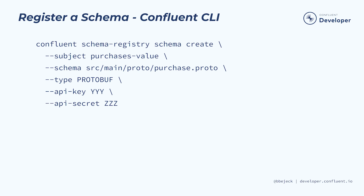The example seen here uses the Confluent CLI. Take note of the subject name Purchases Value. This indicates that this schema represents the value part of the key-value records within the purchases topic. If we also wanted to have a schema to define the key, the subject name of that schema would be Purchases Key. And as a side note, while you can have a schema for the key, it's worth mentioning that scalar values like string and integer are better suited for the key.